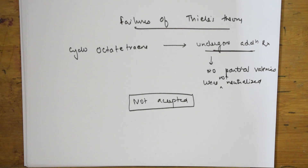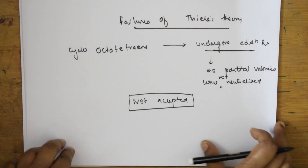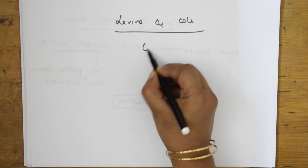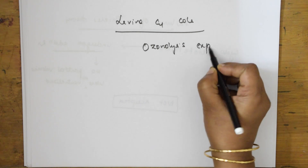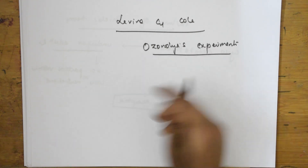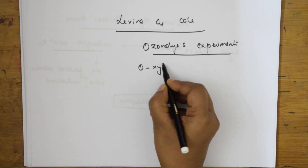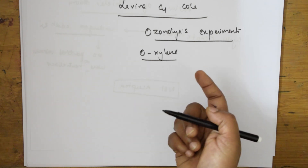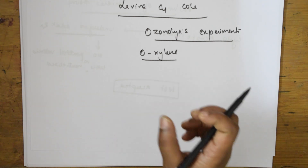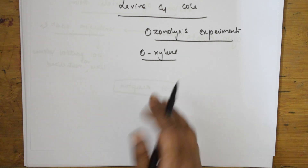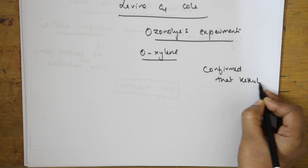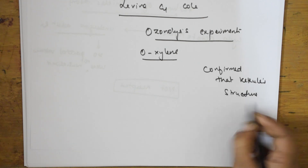So such different theories were given other than Kekulé. Now we will see what Levine and Kohl did. Levine and Kohl conducted ozonolysis experiments on orthoxylene. After conducting this experiment, they said that Kekulé structures are acceptable for benzene. Because of the orthoxylene ozonolysis experiment, this was a support to Kekulé structure — they proved and confirmed that Kekulé structures are acceptable.